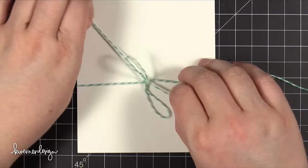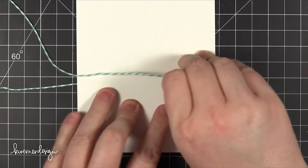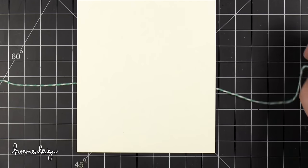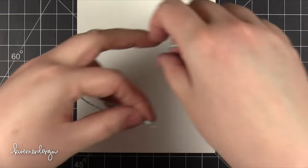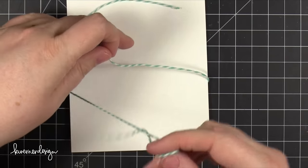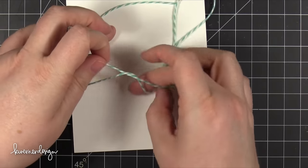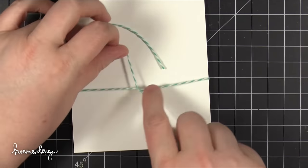So the way you can fix that is you do it the opposite way on the second round. Okay. So I'm going to do this again. I'm going to take the left string over the right. Pull that tight. Alright.